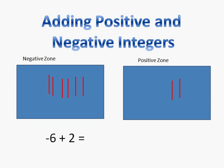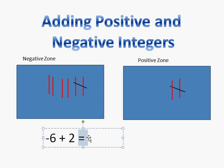Now I have to cross out the matching ones. I have two in my positive zone — I'm going to cross out two. And two in my negative zone I'm going to cross out. Now since I'm still left with numbers in my negative zone, I know this answer is going to be negative. And since there are four left in my negative zone, I know that negative six plus two equals negative four.